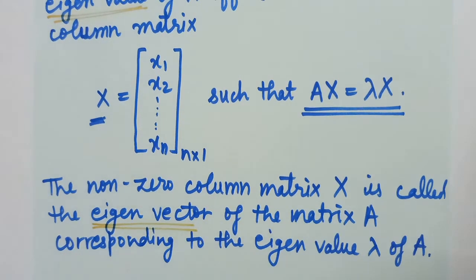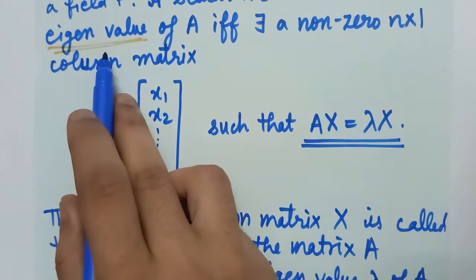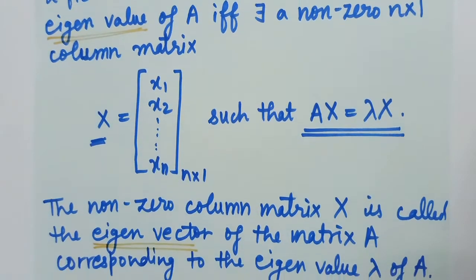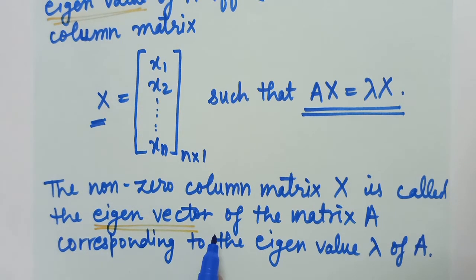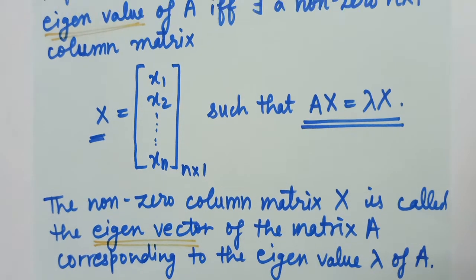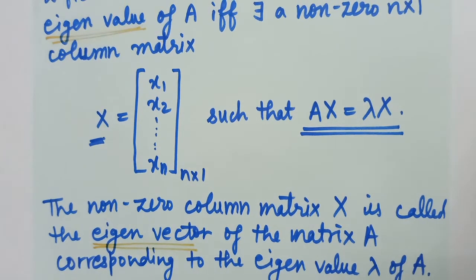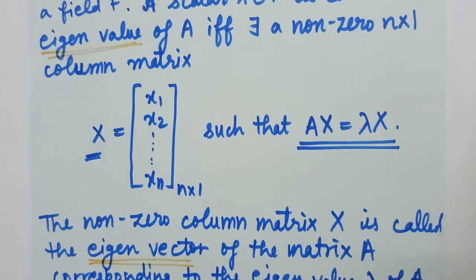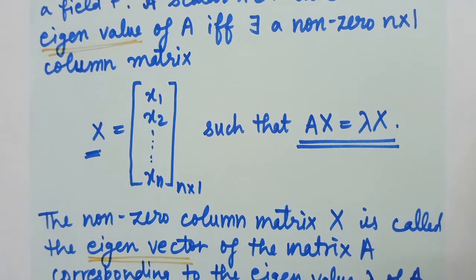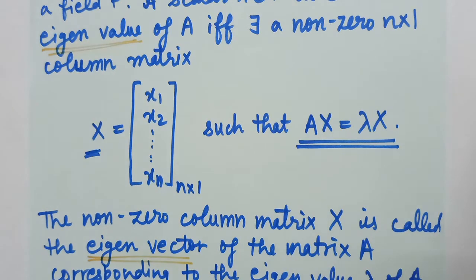Remember, eigenvalue is also called characteristic value, and similarly eigenvector is also called characteristic vector. Now that we understand what an eigenvalue and eigenvector are, let's proceed towards the proof of the theorem.